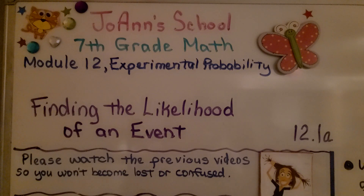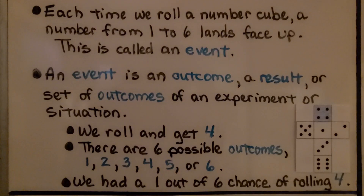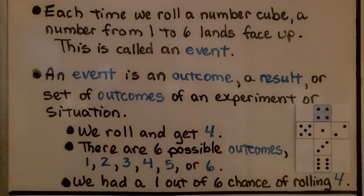Lesson 12.1a: Finding the Likelihood of an Event. Each time we roll a number cube, a number from 1 to 6 lands face up. This is called an event. An event is an outcome, a result, or set of outcomes of an experiment or situation.